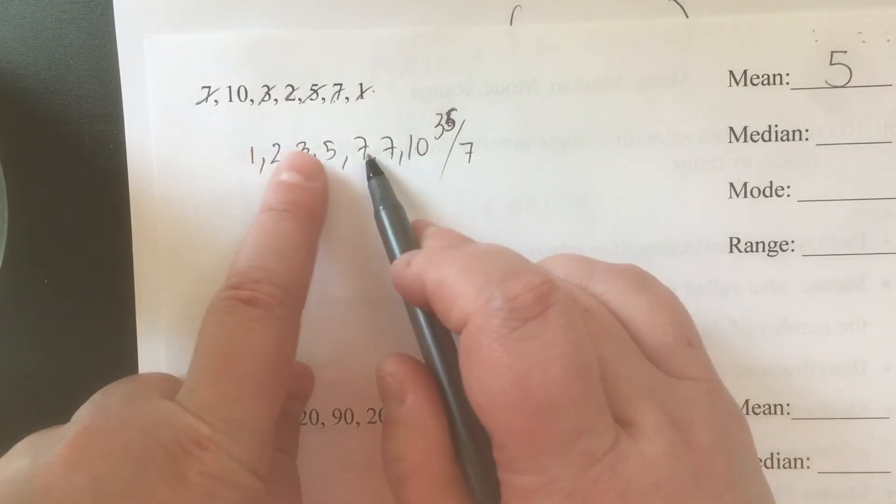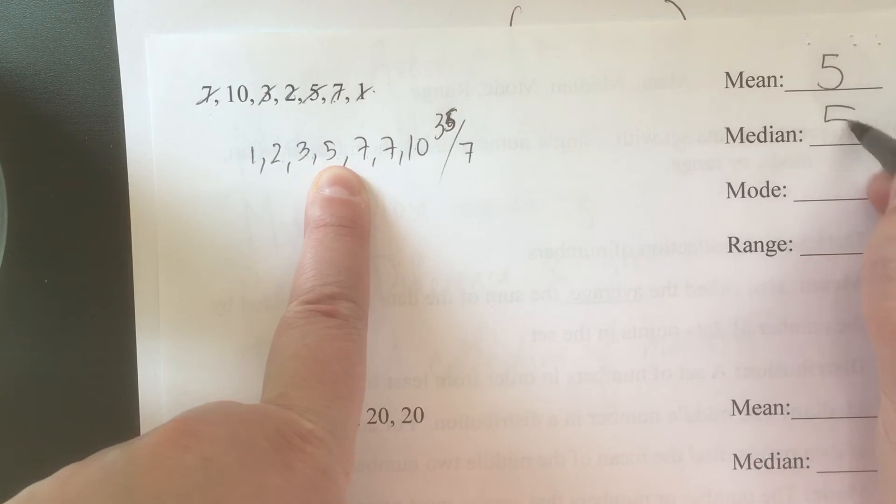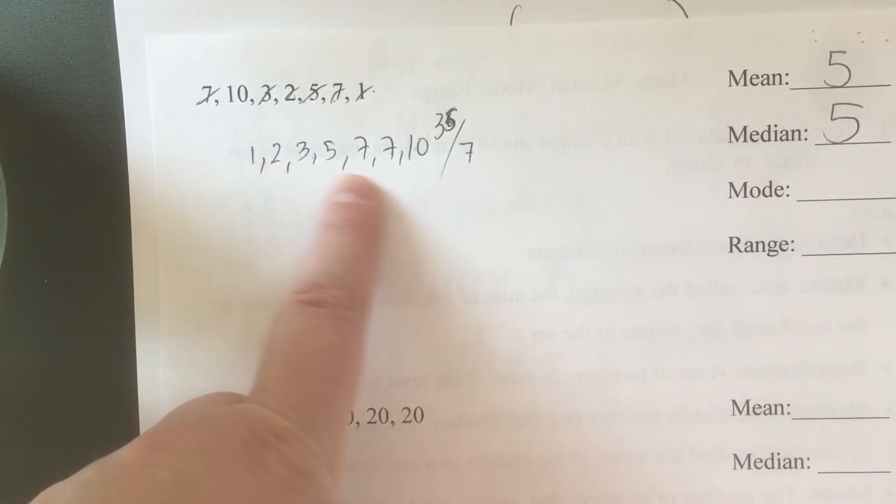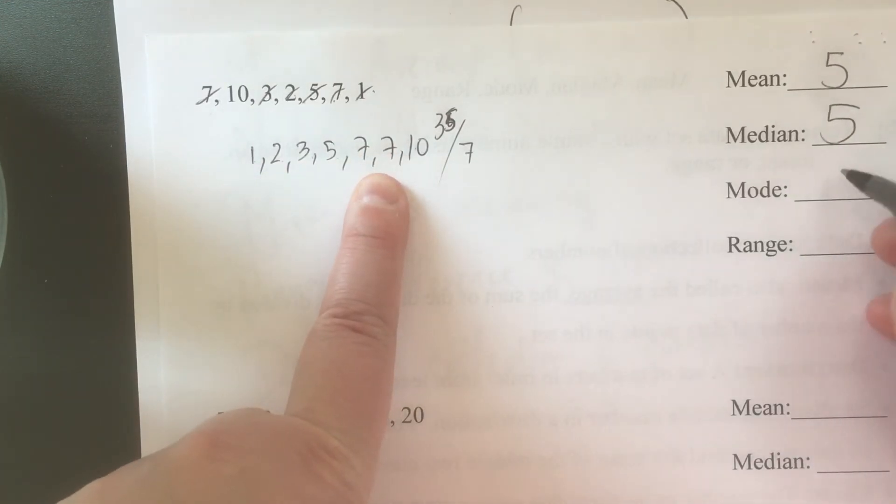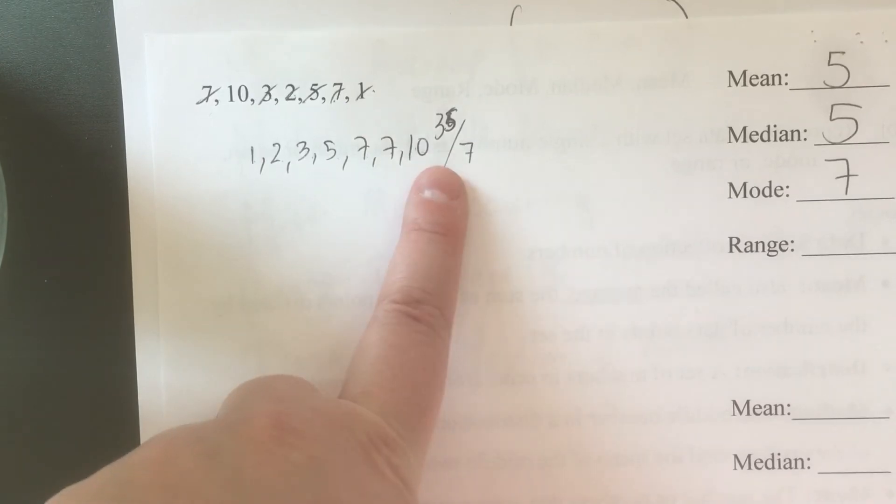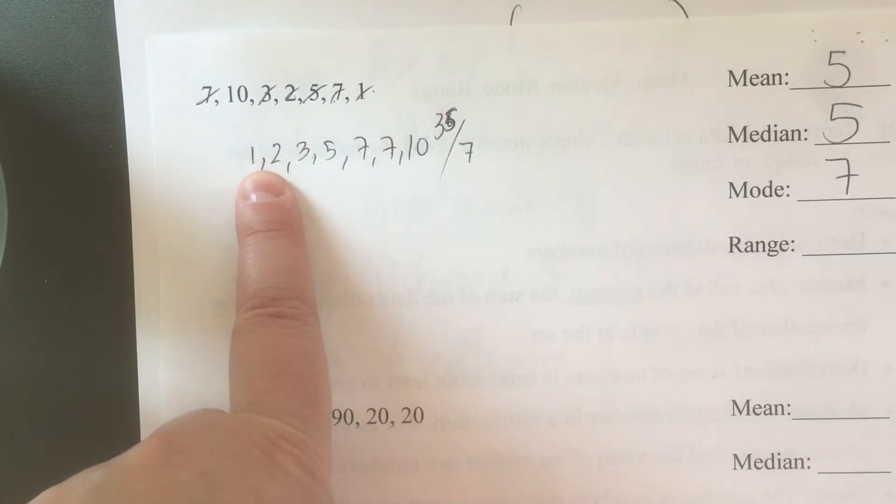The median is 5. Most occurring number - there's only one that happens more than once, which is 7. And the range: 10 minus 1 is 9.